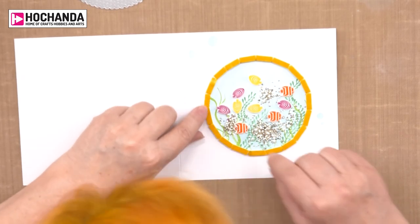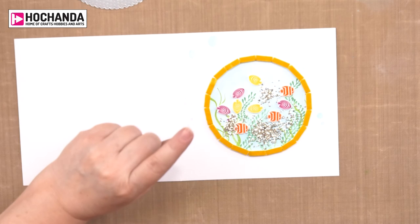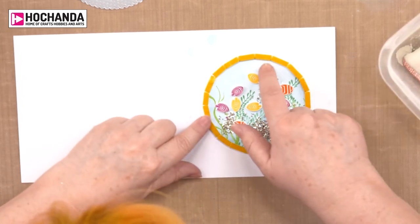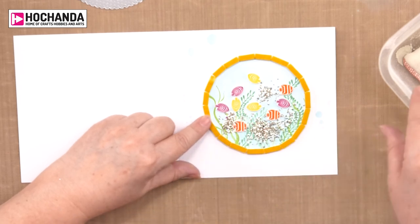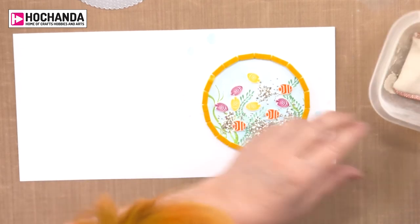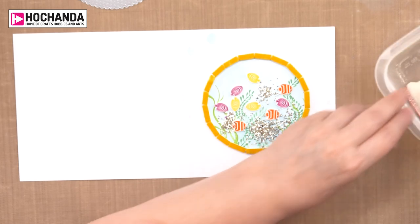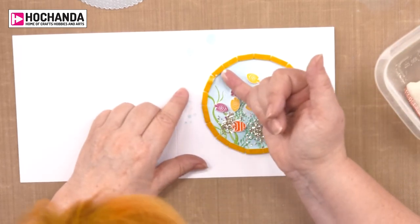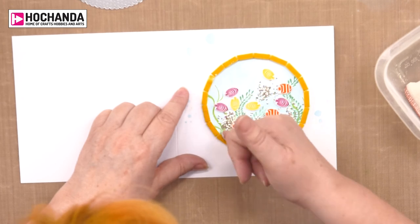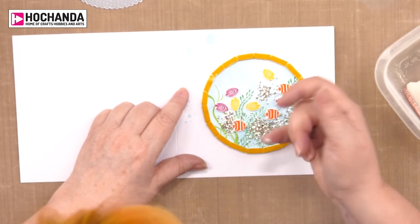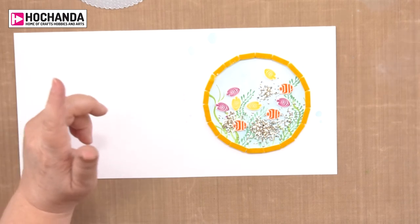Now we need to find the end. One thing I was going to say, if you find that around the inside of your tape is sticky, I just use a little paint brush and a little bit of anti-static and just wipe it around the inside. That way it stops your beads and your shrink plastic sticking to the sticky tape. Just a little tip.